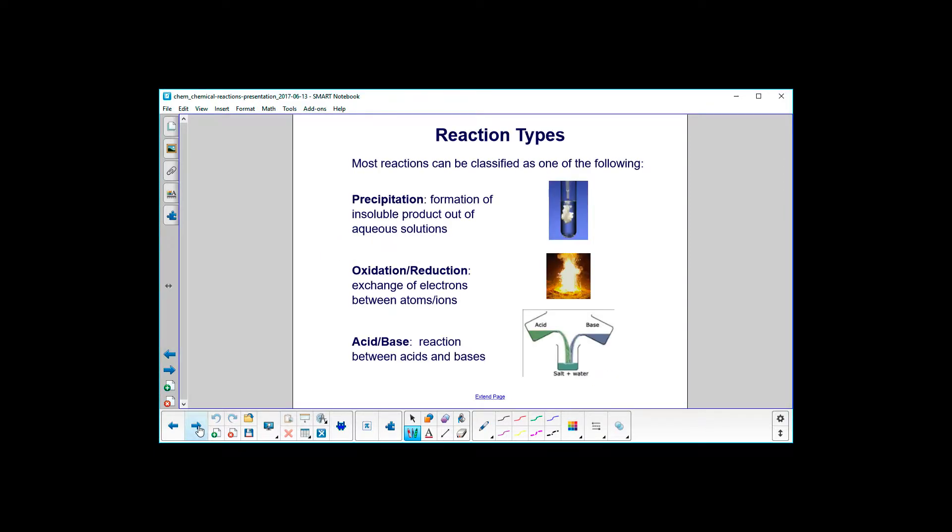Types of chemical reactions. Most reactions can be classified as one of the following: precipitation, that's when you form an insoluble product out of aqueous solutions, basically you mix two liquids together and a solid comes out of it.